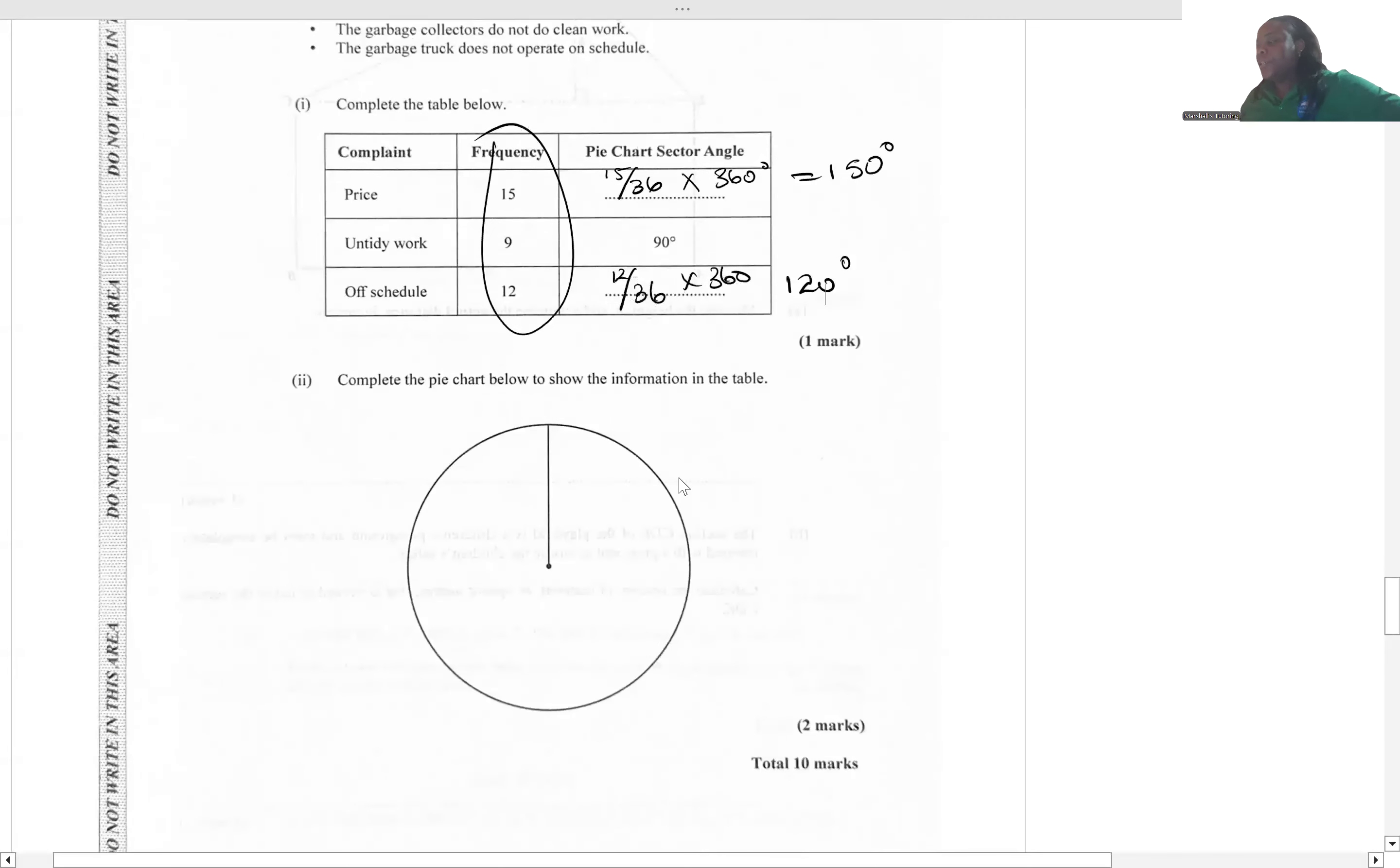Complete the pie chart below to show the information in the table. I'm doing this on the screen so it wouldn't be as accurate, but you have your protractors and stuff. You can measure those angles. So 90 degrees off the bat, 90 degree angle, it's going to look like a straight line this way. Make sure and put your indicator, and we're going to label that untidy work. And then we have 150 and 120 degrees. So this would be about 120, this would be about 150 degrees. You label up your stuff. This is the price, and here we have off schedule.